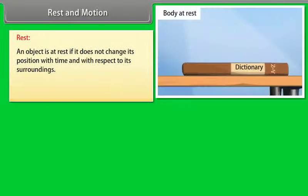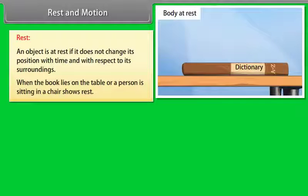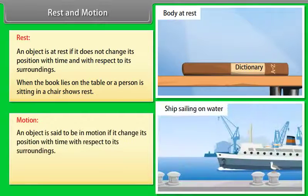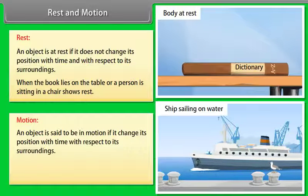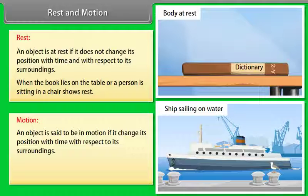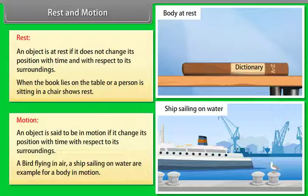Rest and motion: An object is said to be at rest if it does not change its position with time with respect to its surroundings. When a book lies on a table or a person sits in a chair, it shows rest. An object is said to be in motion if it changes its position with time with respect to its surroundings. A bird flying in air and a ship sailing on water are examples of a body in motion.